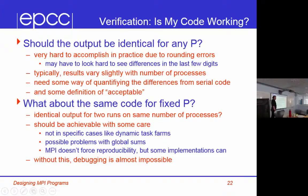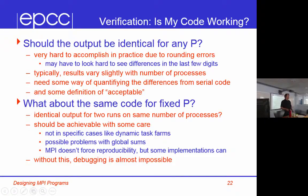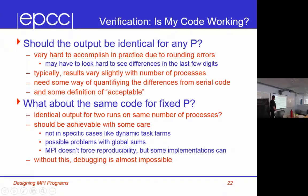Dan is pointing me to page 175 of the standard which says it is strongly recommended that MPI reduce be implemented so that the same result may be obtained whenever the function is applied on the same arguments in the same order. Note that this may prevent optimizations that take advantage of the physical location of ranks. Some MPI libraries have an environment variable where you can say make sure all reductions are reproducible, or turn that off for a bit more performance.